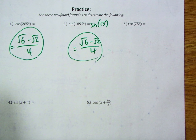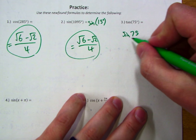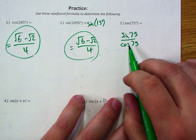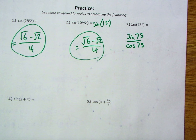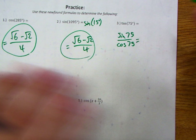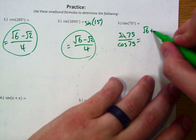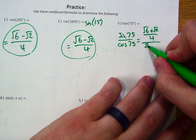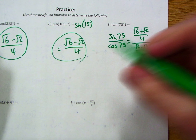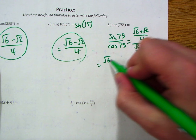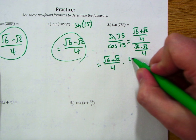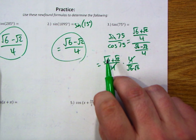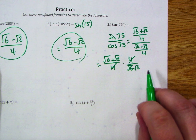For tangent of 75°, I'd recommend viewing this as sine of 75 over cosine of 75, doing separate sum or difference formulas for numerator and denominator. The numerator — sine of 75 — gives (√6 + √2)/4, and the denominator — cosine of 75 — gives (√6 − √2)/4. Multiplying the numerator by the reciprocal of the denominator, the fours cancel and we're left with (√6 + √2) over (√6 − √2).